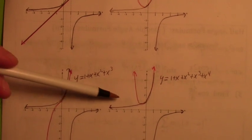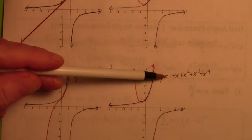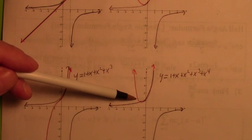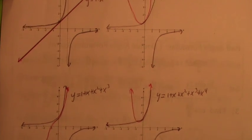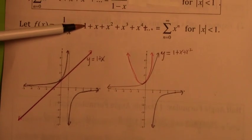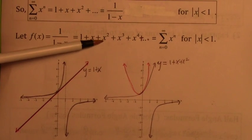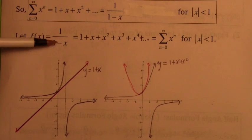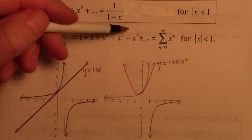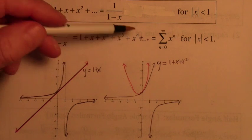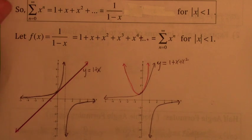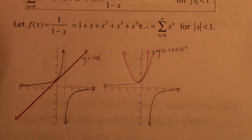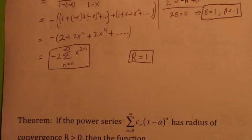The first five terms give the fourth degree polynomial function. The more terms you take of the power series, the better the approximation is to the actual function. If you take infinitely many terms, it would actually equal the function as long as you're between negative 1 and 1.